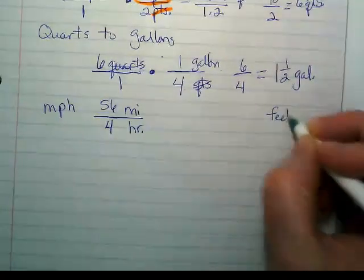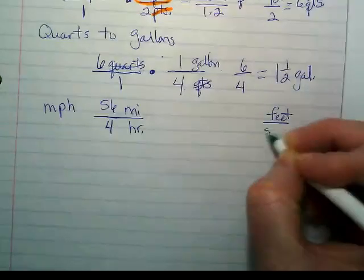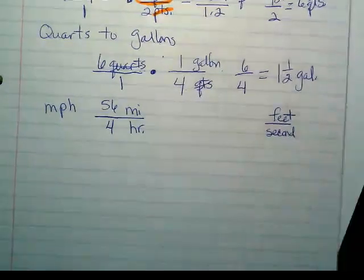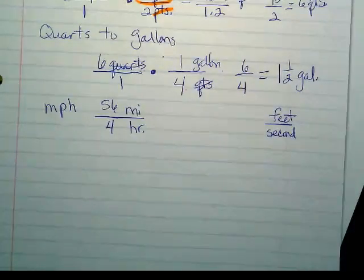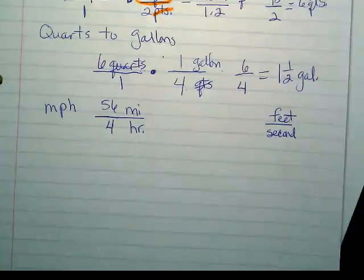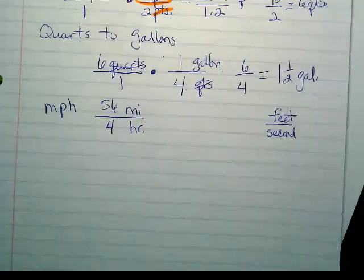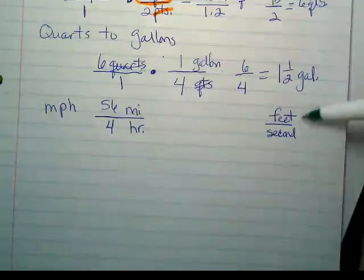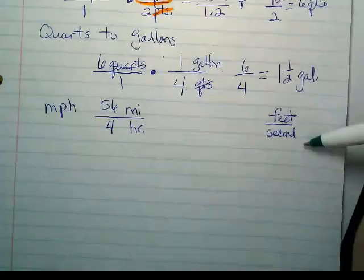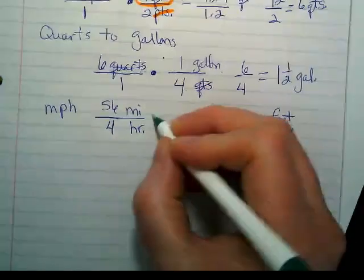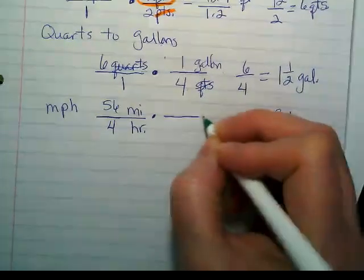So our answer has to be in feet per second. I want you to notice what I just did as I read it. They tell you the ratio that we want at the end. If you write it, it helps you set up your ratios as you go. Because feet is going to have to be in the top, and seconds is going to have to be in the bottom. We're going to need two conversion ratios here.